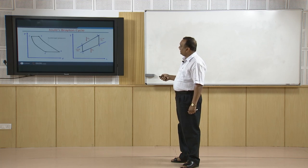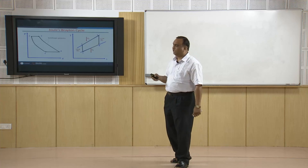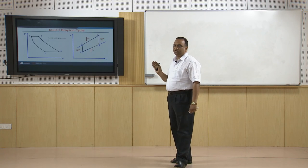When state 3 is attained, expansion of air takes place and we attain state 4. The net output of the cycle is the area of the PV diagram under 1-2-3-4. Process 1 to 2 is isentropic compression where work is done by the compressor on the air. Process 2 to 3 is constant pressure heat addition. Process 3 to 4 is output of the turbine where expansion of hot air takes place. Process 4 to 1 is the cooling process, or if it is an open cycle, the air is thrown to the surroundings at state 4.